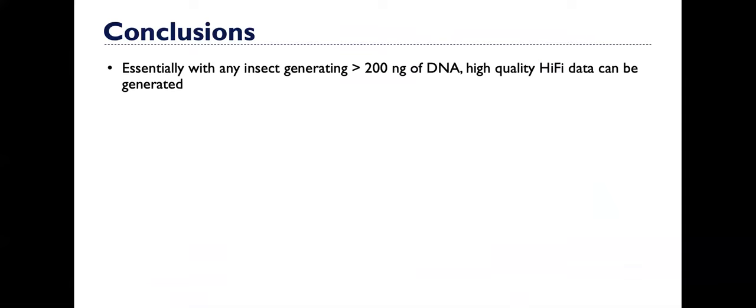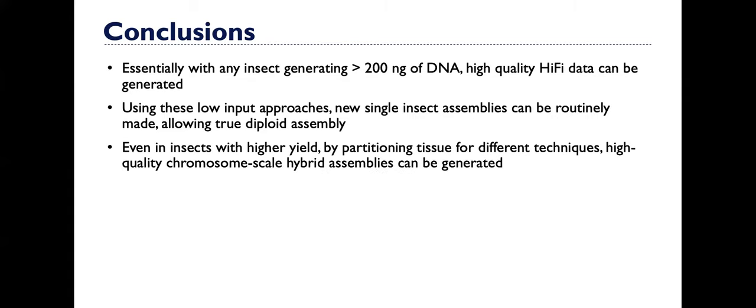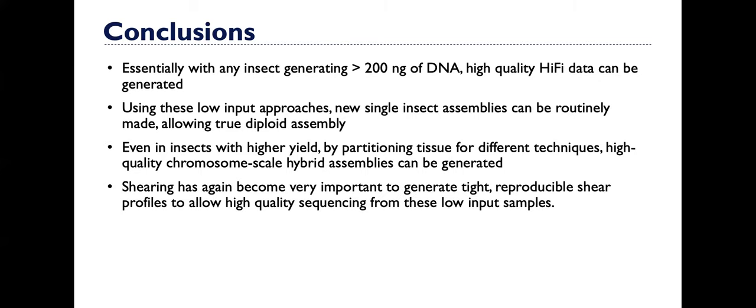Essentially with any insect generating more than 200 nanograms of DNA, I think you can generate high quality hi-fi data. Depending on the genome size of that organism will depend if that's sufficient for a high quality assembly. Using these low input approaches though, new single insect assemblies can also be routinely made of true diploid assembly. So if you have an insect you can get five micrograms from, just take three or four hundred nanograms of DNA from it to make your hi-fi data and save the rest for trying other approaches that will complement that hi-fi data, like Hi-C, like other scaffolding techniques. And even in insects with higher yield, by partitioning tissue offered different technique types, high quality chromosome scale assemblies, hybrid assemblies can be generated.